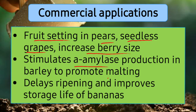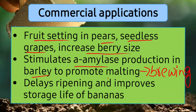Malting is the process by which barley is converted into alcohol, and the enzyme alpha amylase is involved in this. Gibberellins stimulate its production. This is used commercially in the brewing industry — the industry of producing alcohols and beers. Gibberellins also delay ripening and improve the storage life of bananas, keeping them in their best form for a longer time.